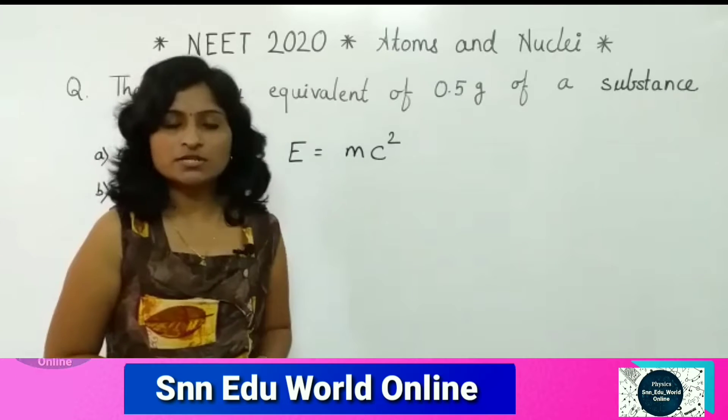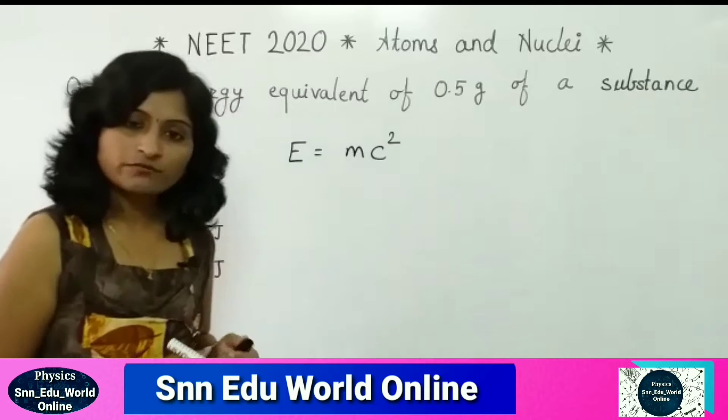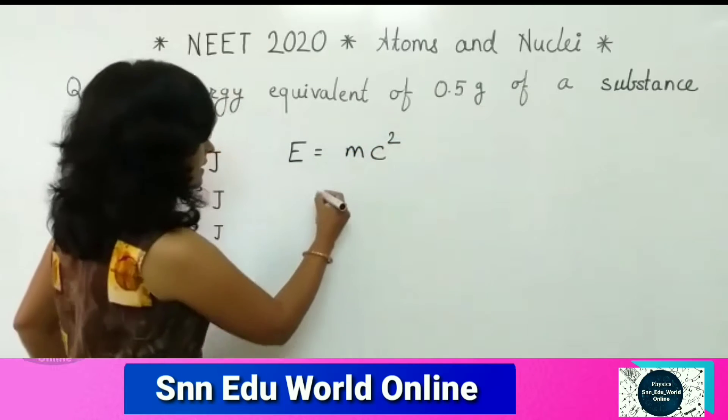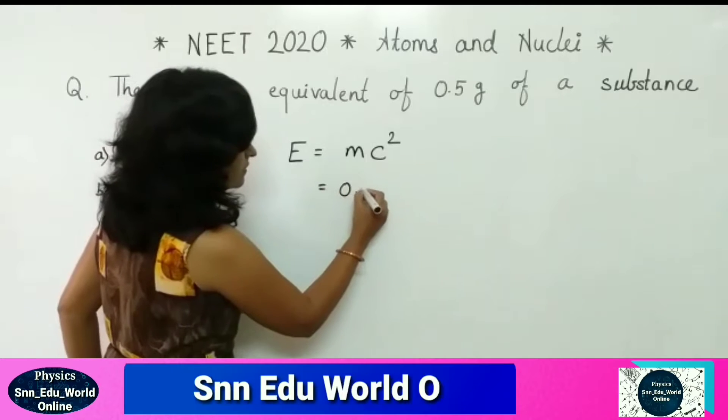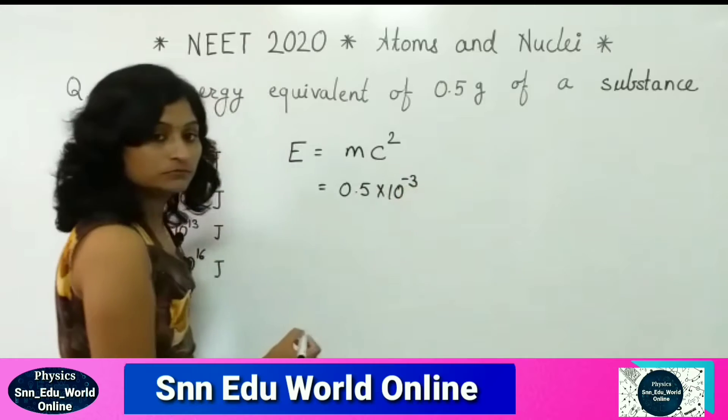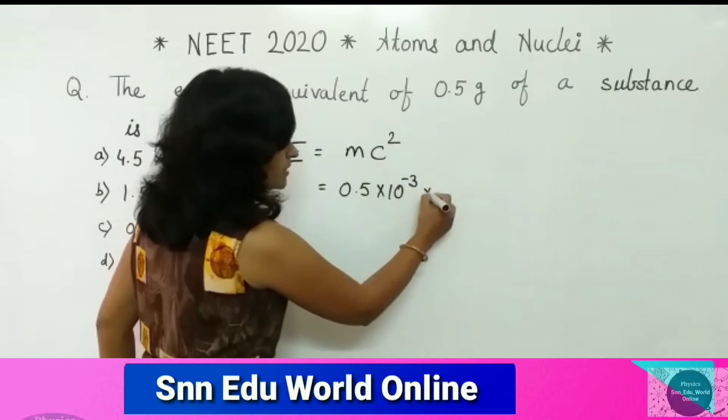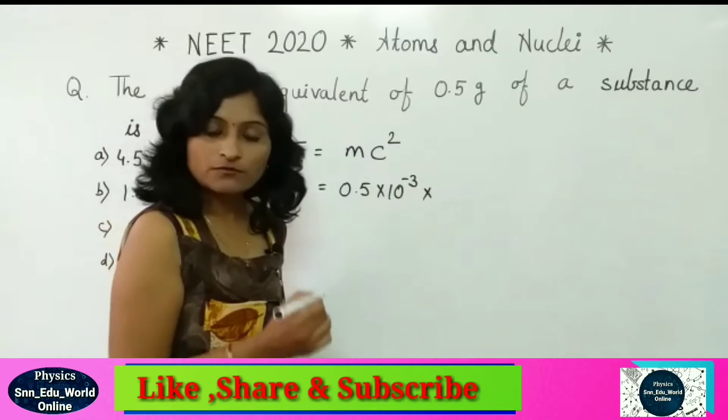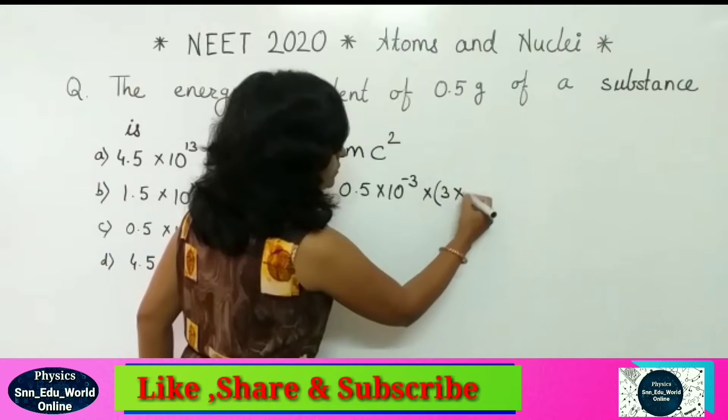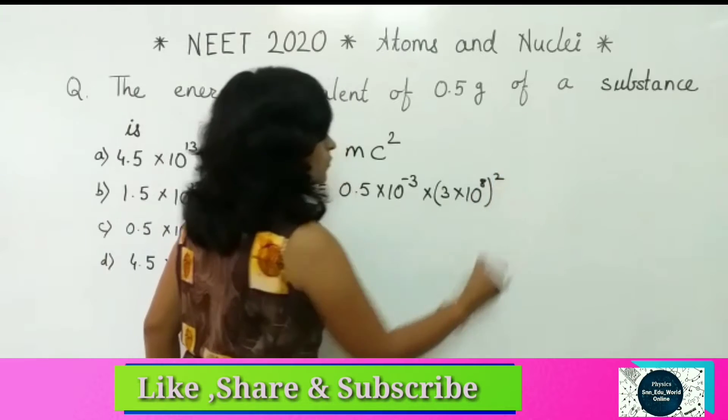Mass is converted into energy. So substitute the values according to given. As we know that it is given in grams, so we can write here mass as 0.5 times 10 raised to minus 3 kilogram. And c is a constant velocity of light, so we will keep here 3 into 10 raised to 8. It is a square.